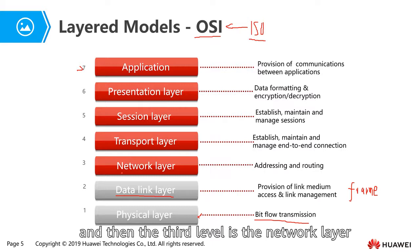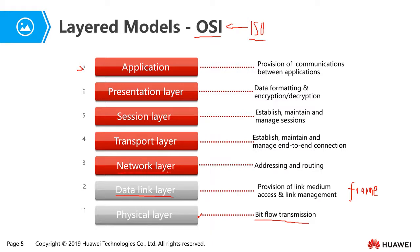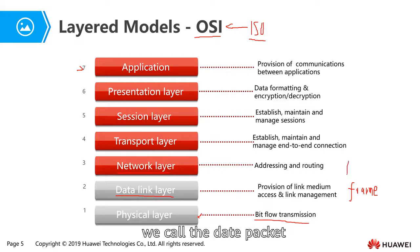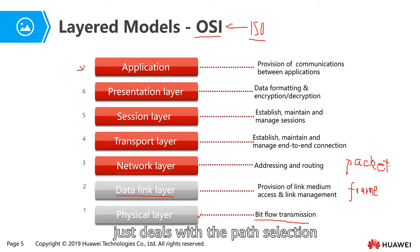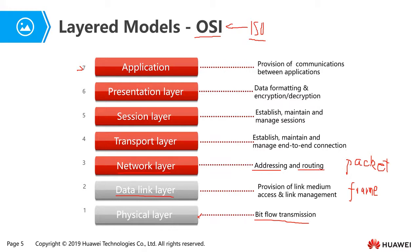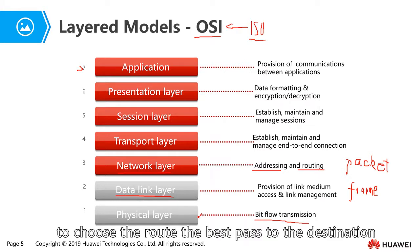The third layer is the network layer. In the network layer, the data is called a packet. This layer deals with path selection — using addressing and routing to choose the best path to the destination.